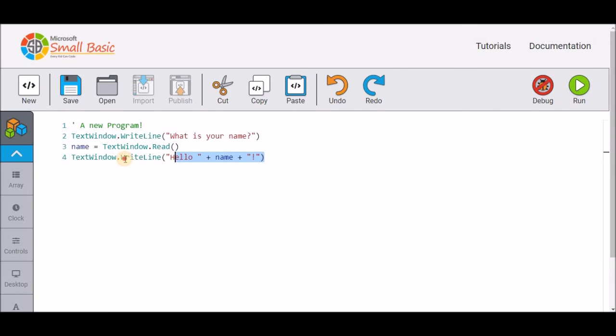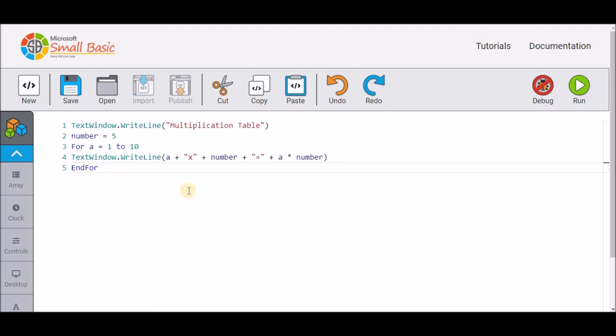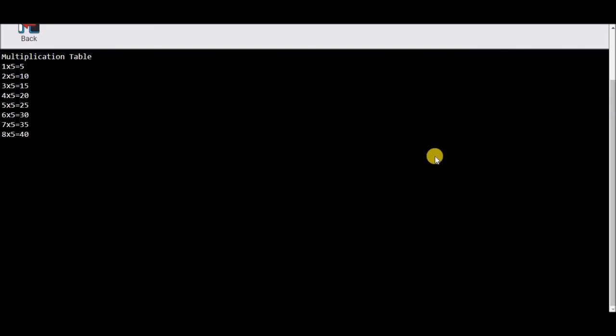Select these lines and press delete. Now you can start typing your program. Click on the run button to see the result. The multiplication table of number 5 is displayed here.